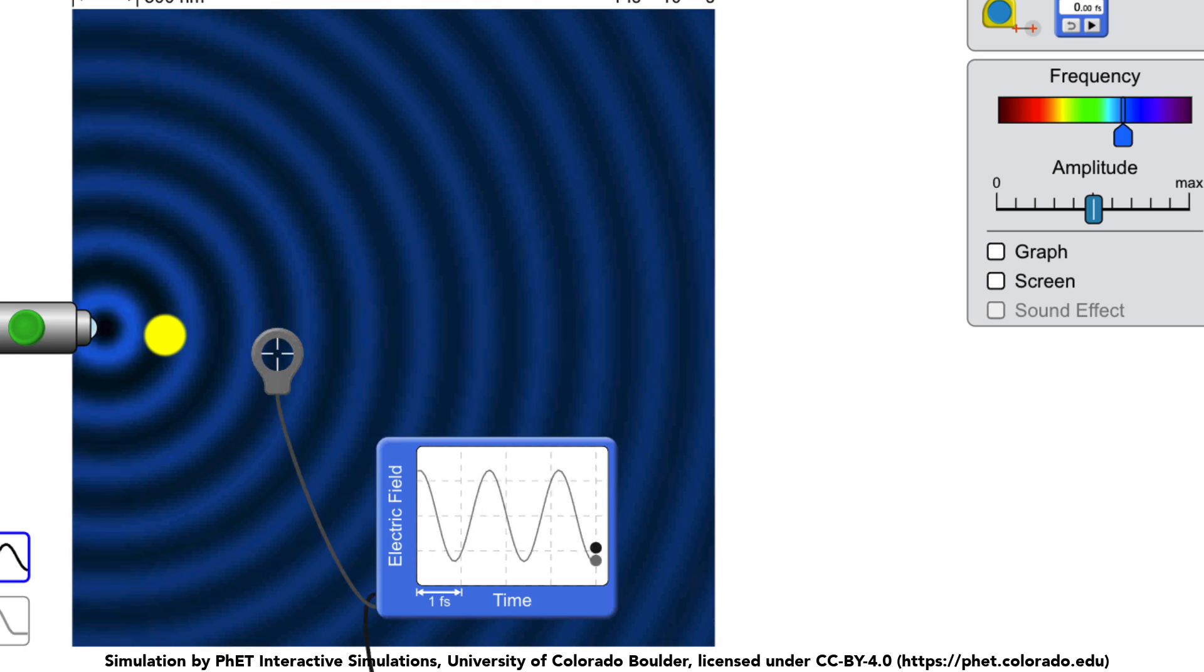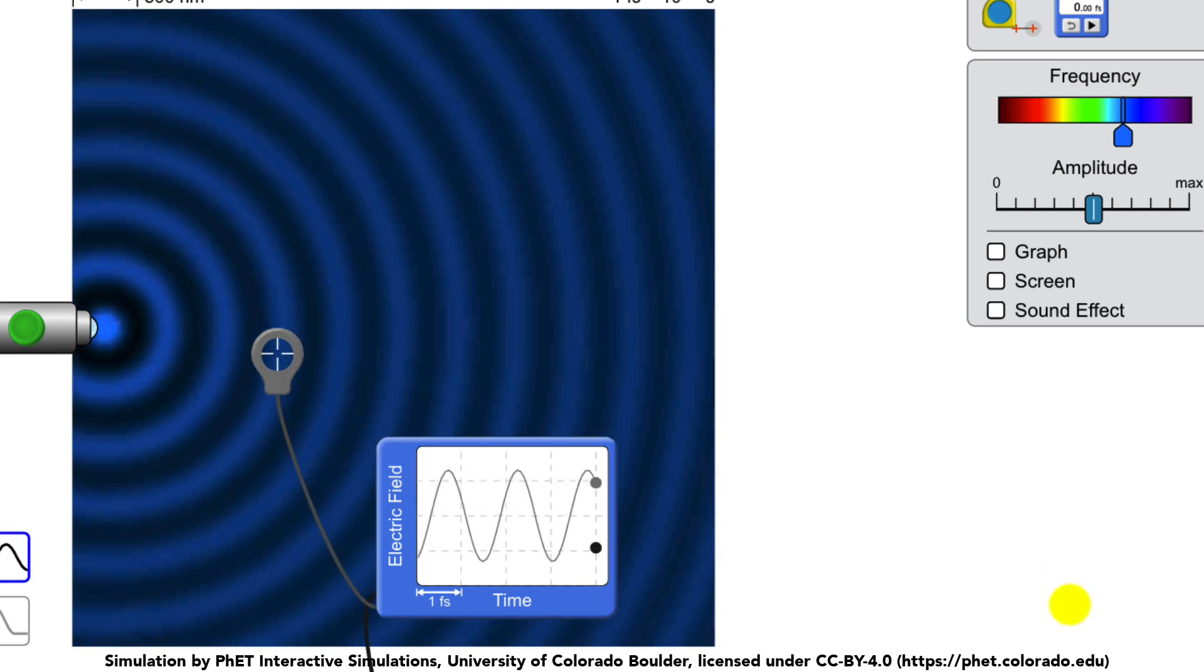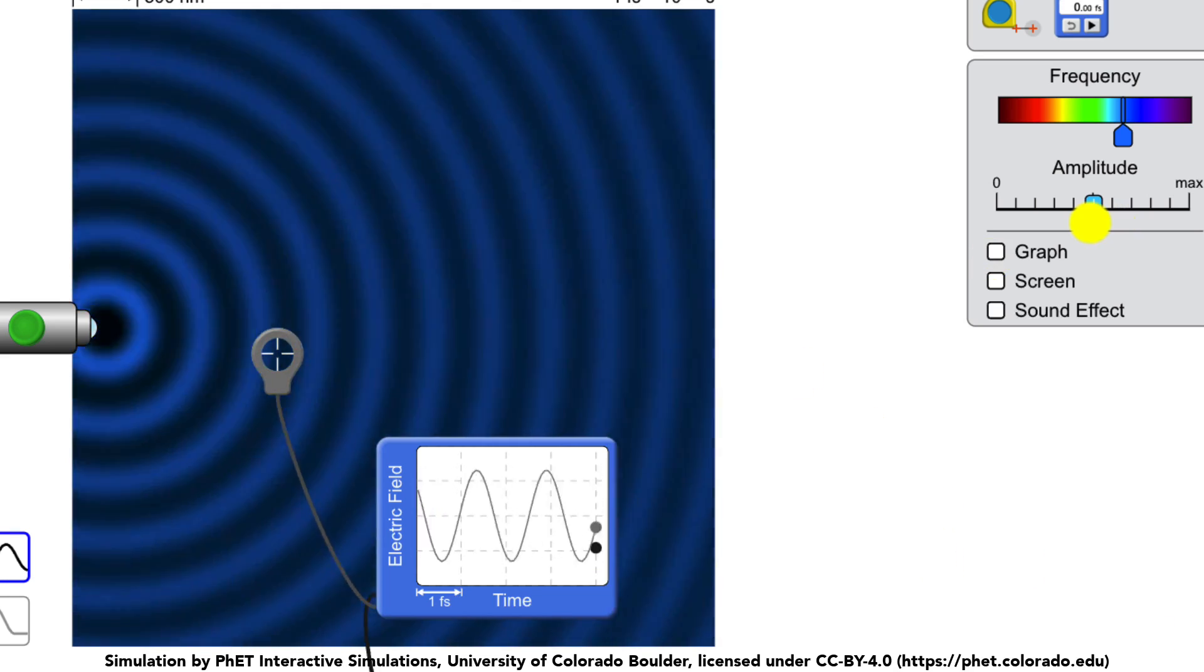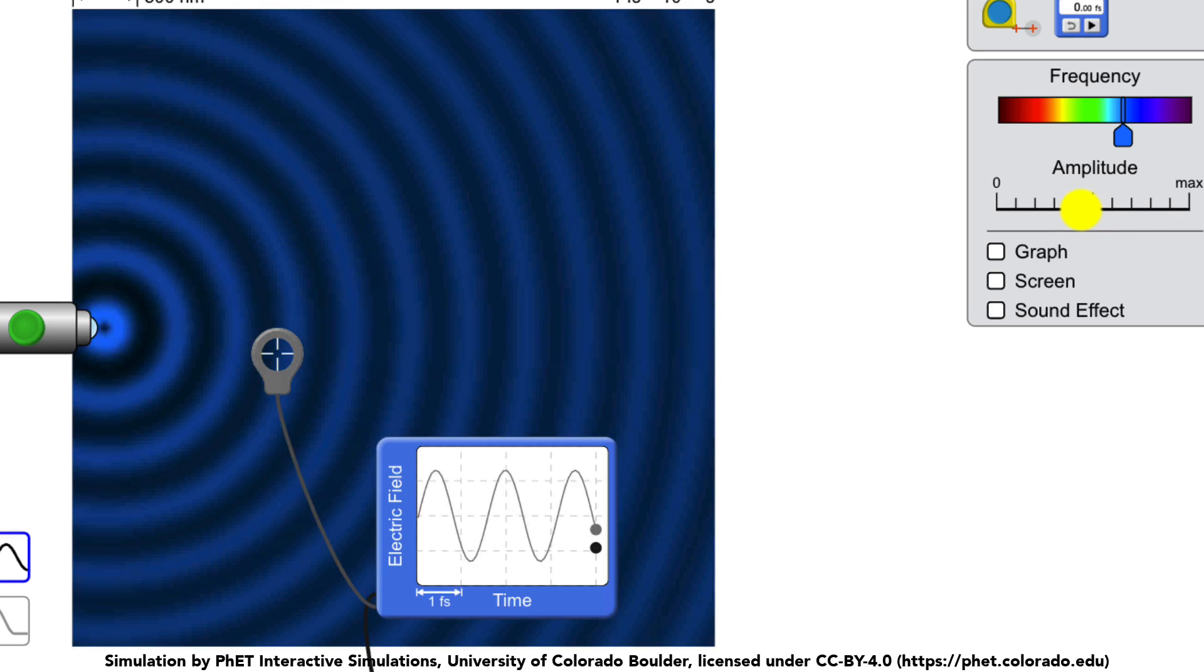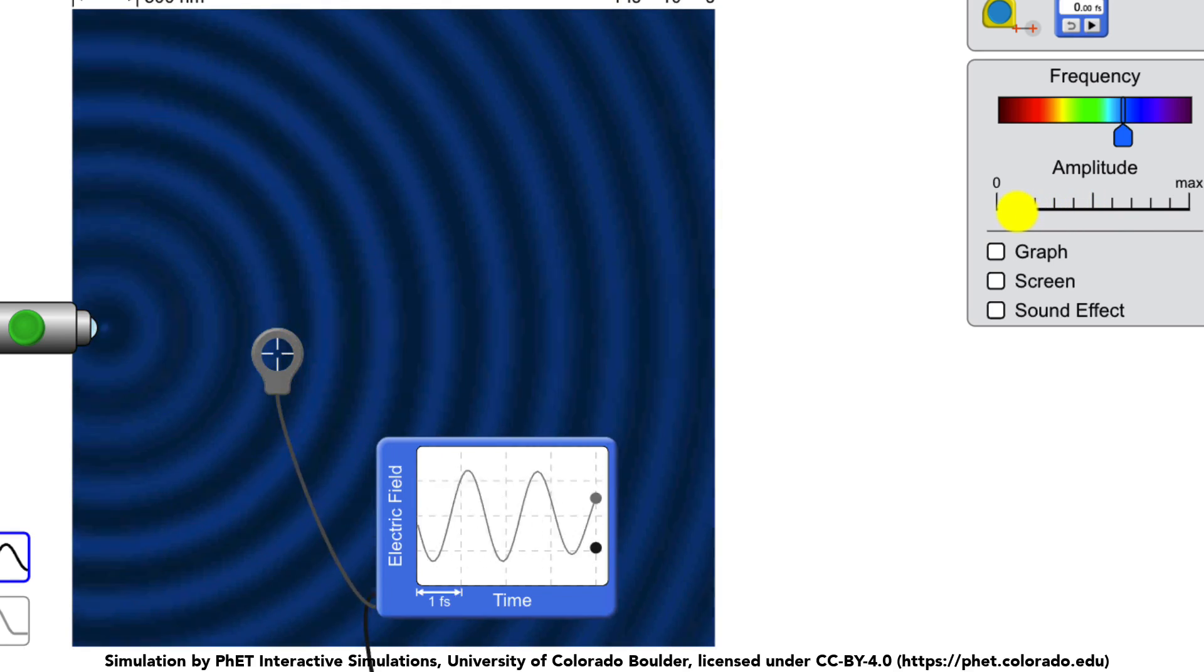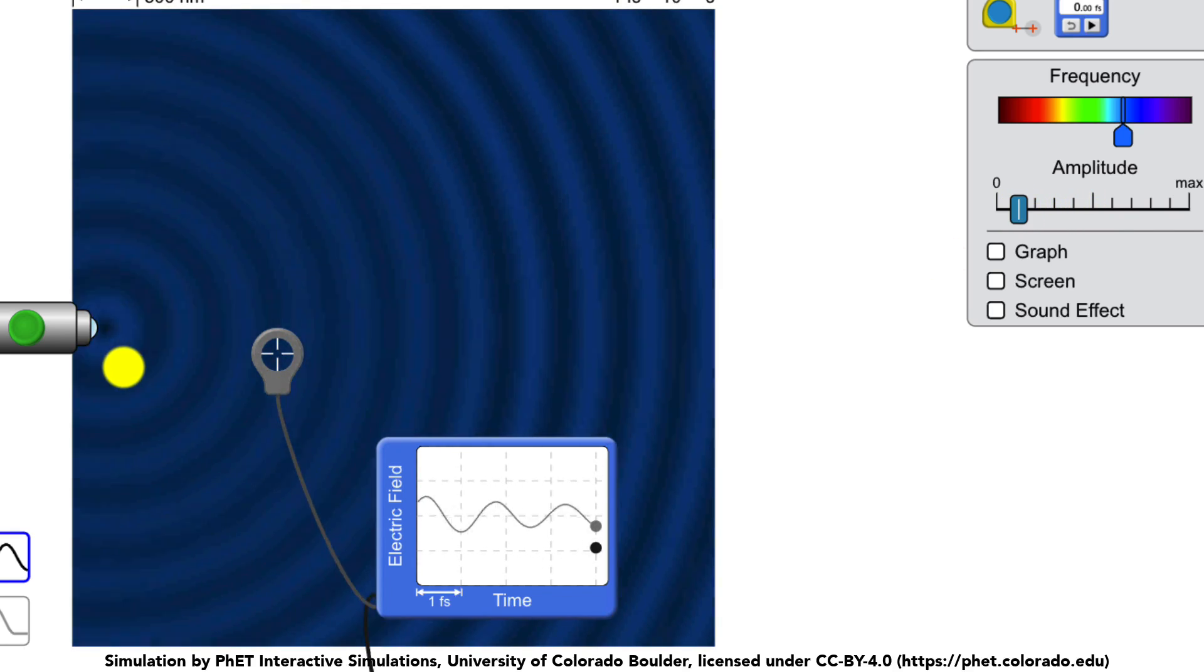What about the brightness? What decides the brightness? Well, let's see. Let me turn on the sound. The brightness is decided by the amplitude. Let me make the amplitude very tiny and see what happens. Here it goes. It's not so bright anymore. It becomes very dim. Look at it. Low amplitude means low brightness.